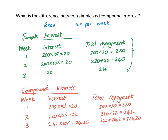With simple interest, I add the same amount of interest each time, and that same amount is based on the original 200 rand. However, with compound interest, the interest I add each time changes — it's based on what is in the account at the beginning of each period. Each week, I add 10% of what is in the account, instead of 10% of what was there originally.